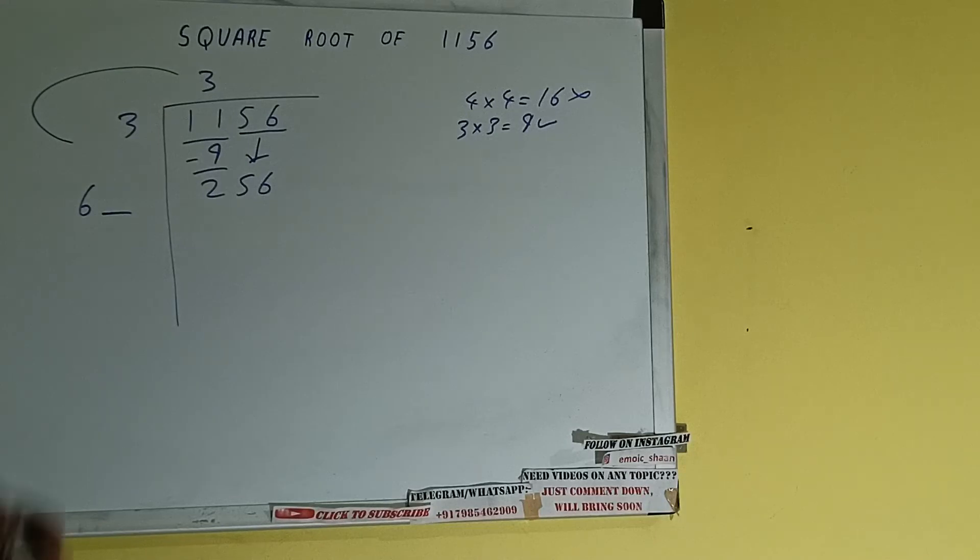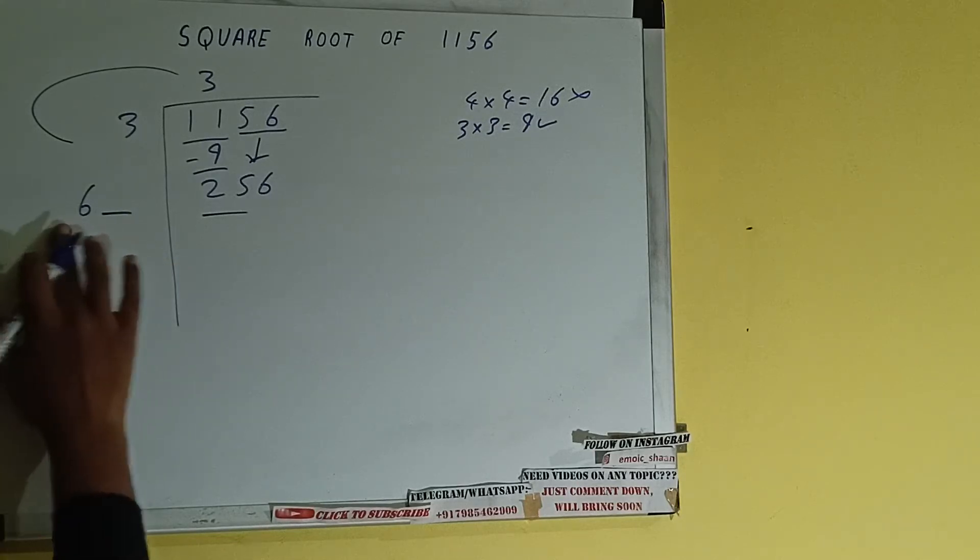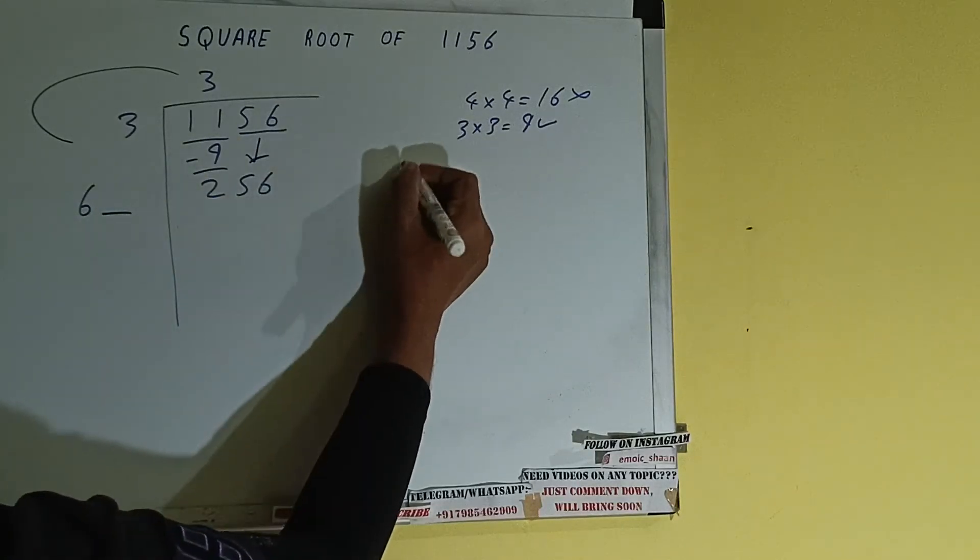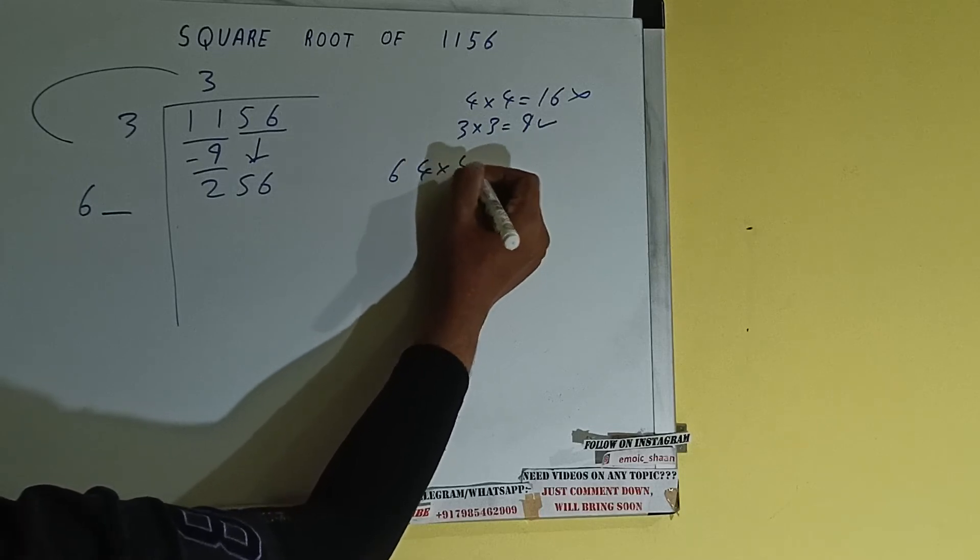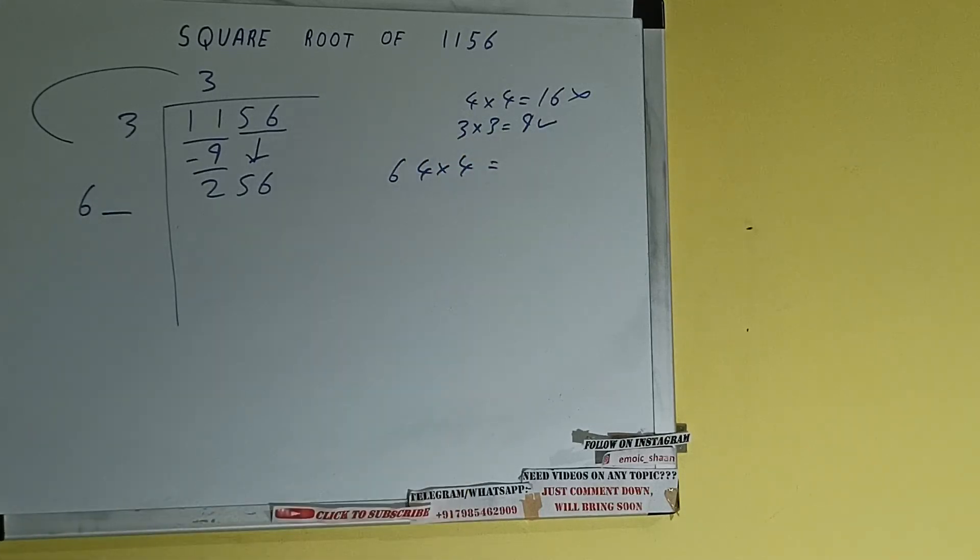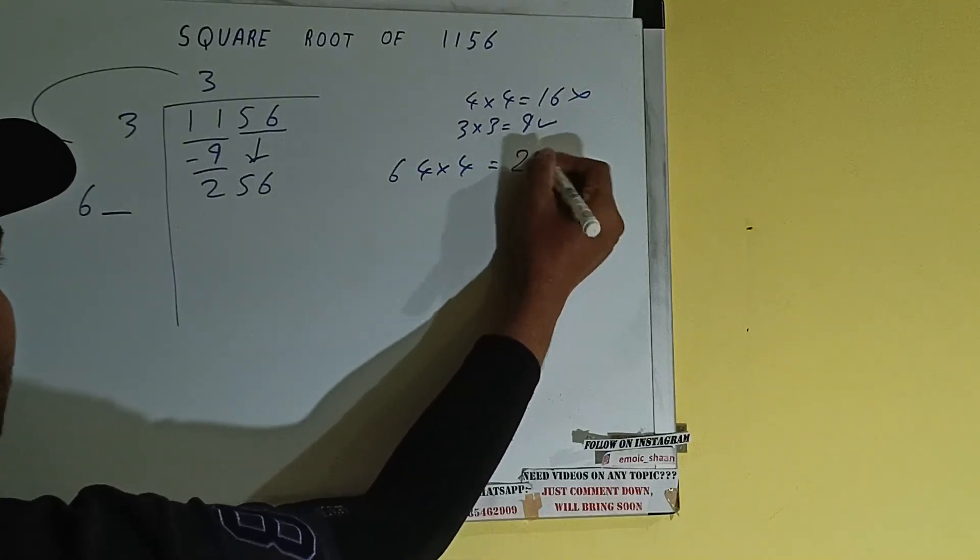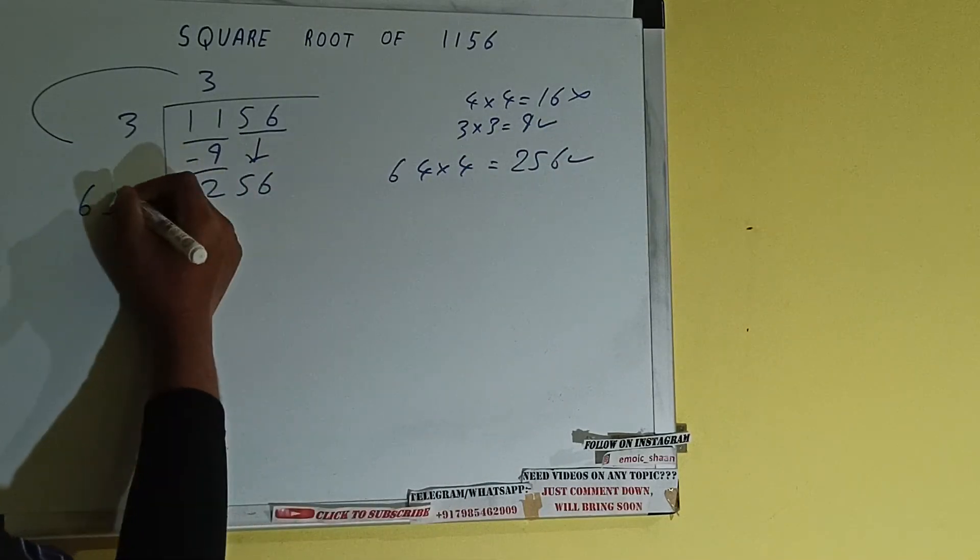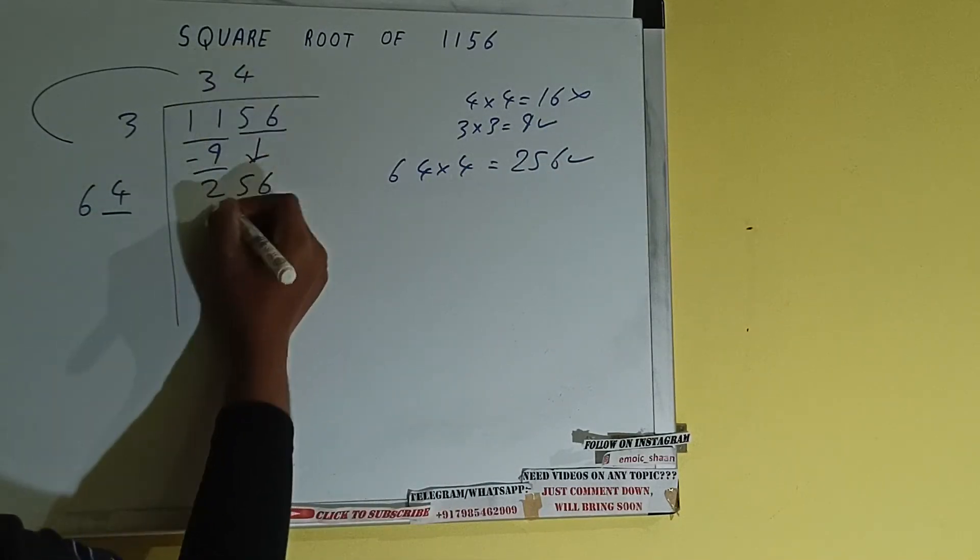Now whatever number we write here, we have to write here also. So we can compare this 6 and 25. 6 times 4 is 24, right? So we can try out 4. 64 into 4 we can try, and it will be 256 which is good to take. So 4 here and 4 here.